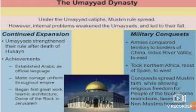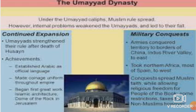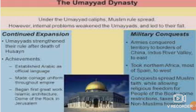Let's recapitulate some important facts related to the Umayyad dynasty. Under the Umayyad caliphs, Muslim rule spread; however, internal problems weakened the Umayyads and led to their fall. They continued with expansion and strengthened their rule after the death of Hussein. Their achievements include establishing Arabic as the official language, making coinage uniform throughout the empire, and beginning the first great works of Islamic architecture — most notably the Dome of Rock in Jerusalem, an image of which is shown here in the slide.